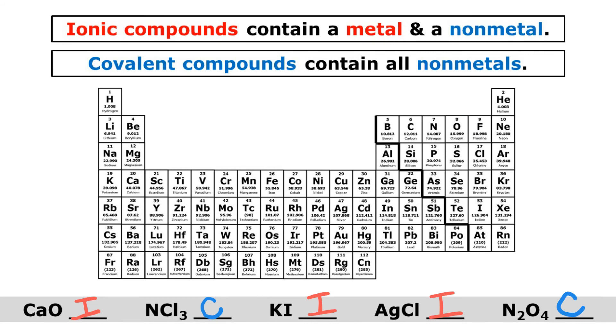So it really is that simple. You just find the elements in the compound. If you have a metal and a non-metal, then it's ionic. And if they're all non-metals, it's covalent.